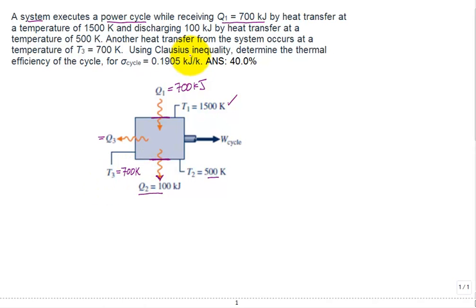Using the Clausius inequality that we turn into an equality, determine the thermal efficiency of the cycle when the sigma of the cycle is 0.1905 kilojoules per kelvin. The answer for the thermal efficiency should be 40%. So how do we do this?